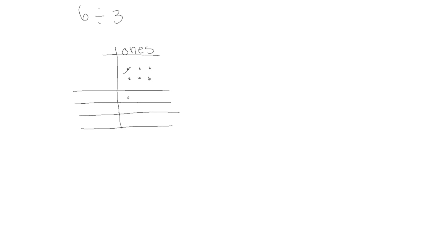We put one in the first group, one in the second group, one in the third group, and we see we still have three left so we can keep going. One more in each group. With this we've used all of our original six so we have no remainders. Showing this in long division form, we write six with divisor three, and we see that there's two in each group. Three groups with two in each group — three times two uses six, so we write six here and subtract to see if we have any left, which we don't, so we have a zero remainder.